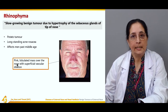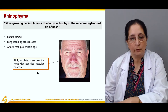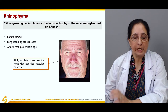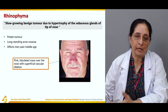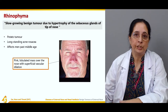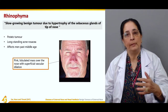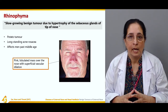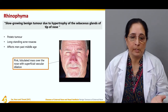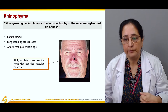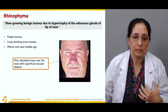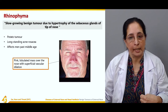Rhinophyma presents as a pink lobulated mass over the nose with superficial vascular dilatation. It is pinkish because of increased vascularity and dilatation of blood vessels, which leads to increased blood flow. It can also bleed very easily due to the increased dilatation of blood vessels.